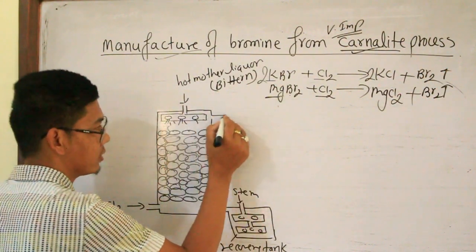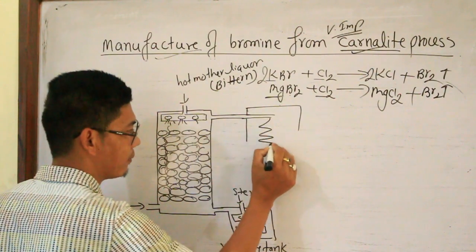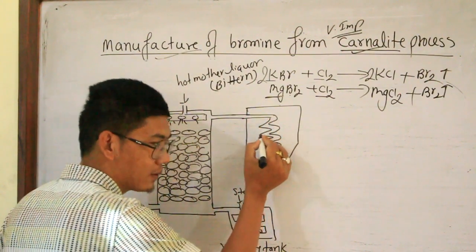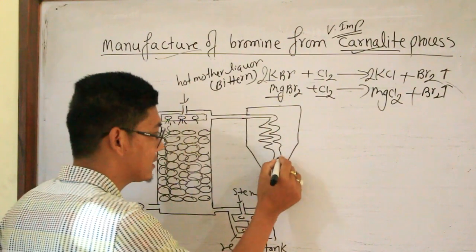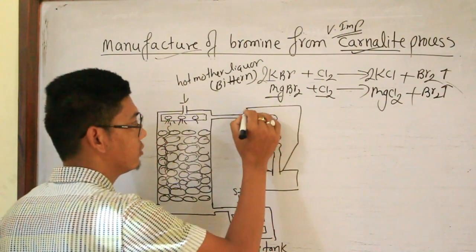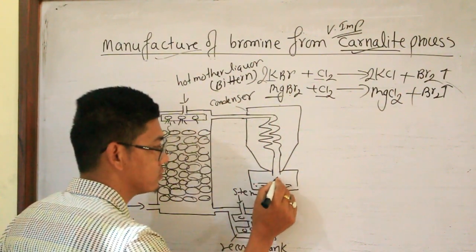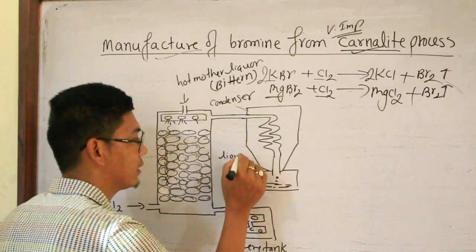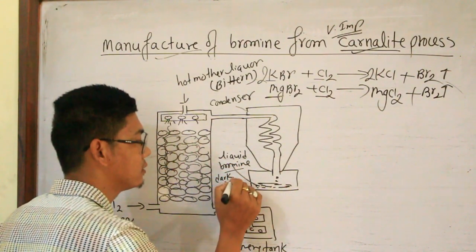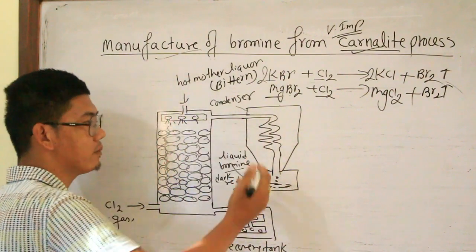Vapour of bromine escapes out through a condenser having a spiral pipe to increase the contact time, so that the maximum amount of bromine gas is condensed. The condensed bromine is collected as liquid bromine.